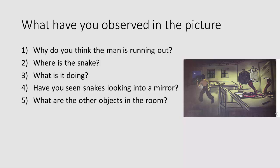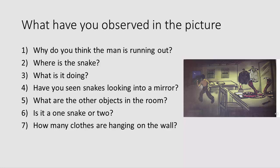What are the other objects in the room? If you observe the picture, we find two tables, a chair, some books on the two tables, a comb, a kerosene lamp, and a coat and bunion hanging on the wall. Is it one snake or two? It is only one snake — the other is its image in the mirror. How many clothes are hanging on the wall? Two — one coat and a bunion. How many exits are there in the room? The room has only one exit.